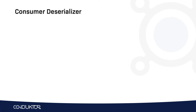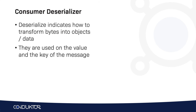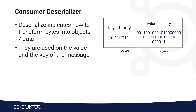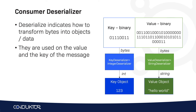So our Kafka consumers are going to be reading messages from Kafka, which are made of bytes. A deserializer will be needed for the consumer to indicate how to transform these bytes back into objects or data, and they will be used on the key and the value of the message. So we have our key and our value — both are binary fields in bytes. We will use a key deserializer of type integer deserializer to transform this into an int and get back numbers like 1, 2, 3 for our key objects. Then we'll use a string deserializer to transform the bytes into a string and read the value back as hello world.